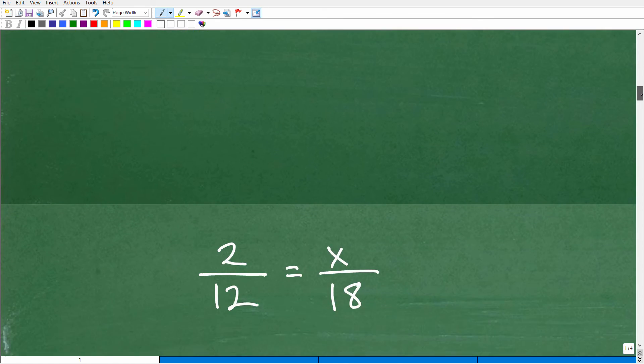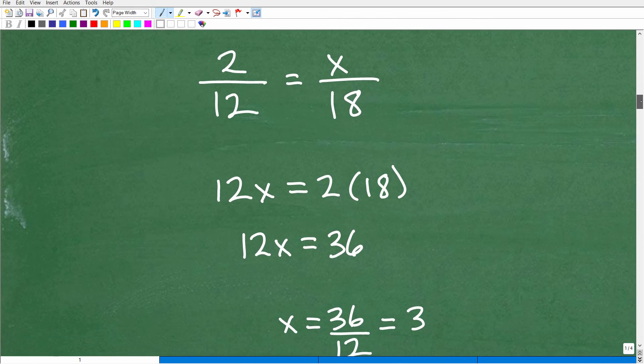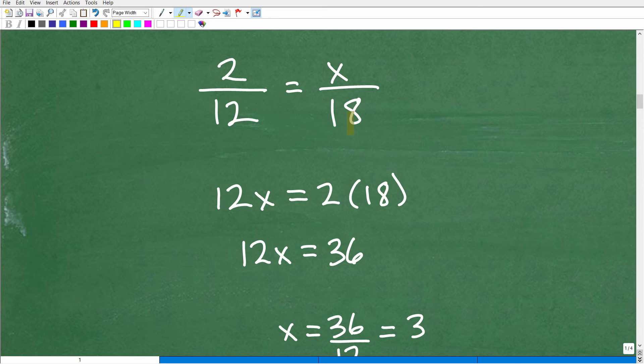So let's go ahead and apply the cross product here. So what we're going to do is just cross multiply. So it's going to be 12 times x. So in algebra, 12 times x is just 12x. And then here, we'll have 2 times 18. So 12 times x is equal to 2 times 18. Again, this is an application of the cross product, and this is a proportion. It's one fraction equal to another fraction. So therefore, I can apply the cross product.